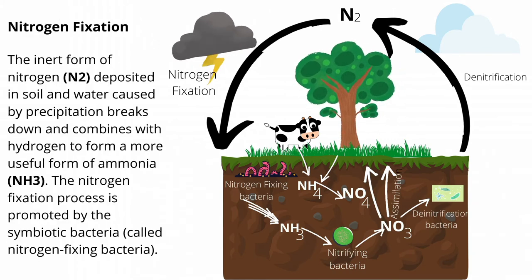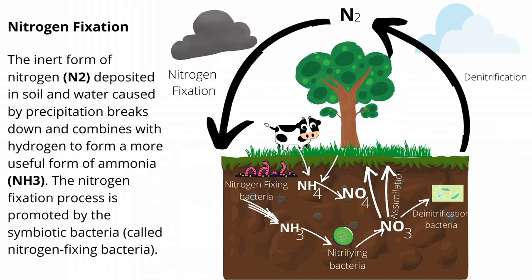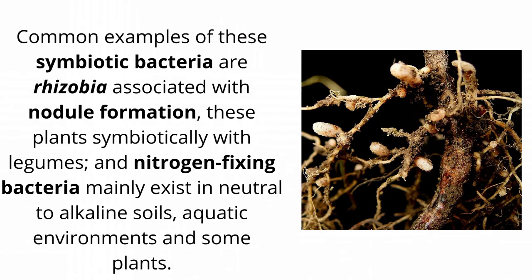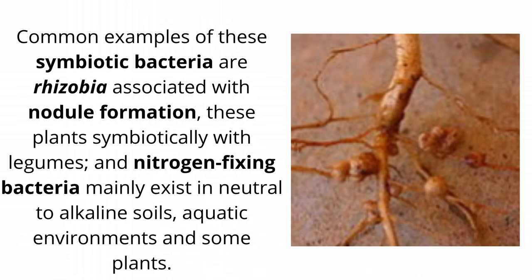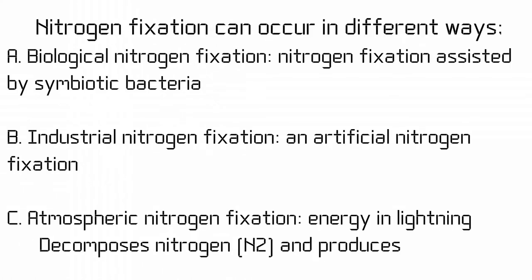Nitrogen fixation. The inert form of nitrogen deposited in soil and water, caused by precipitation, breaks down and combines with hydrogen to form a more useful form of ammonia. The nitrogen fixation process is promoted by symbiotic bacteria called nitrogen-fixing bacteria. Common examples of these symbiotic bacteria are rhizobia. Associated with nodule formation, these plants symbiotically with legumes, and nitrogen-fixing bacteria mainly exist in neutral to alkaline soils, aquatic environments, and some plants. Nitrogen fixation can occur in different ways: A. biological nitrogen fixation — fixation assisted by symbiotic bacteria; B. industrial nitrogen fixation — an artificial nitrogen fixation; C. atmospheric nitrogen fixation — energy in lightning decomposes nitrogen and produces nitrogen compounds.